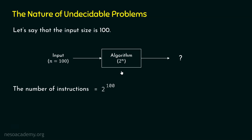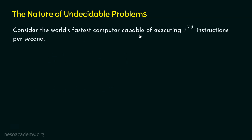We want to know the exact time, so we need to execute our algorithm on some computer. Let's say we have the world's fastest computer and let's calculate the time our algorithm takes. Let's consider the world's fastest computer capable of executing 2 to the power of 20 instructions per second — in one second it can execute 2 to the power of 20 instructions.